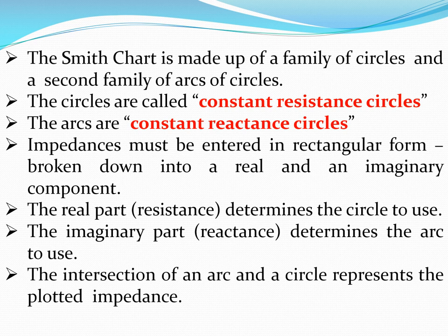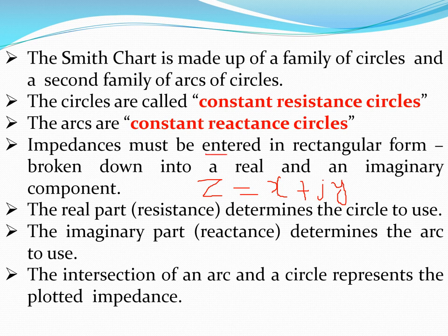Impedances generally will be in rectangular form. What is meant by rectangular form? For example, Z is equal to X plus jY. In that case, X is going to be the real part and Y is going to be the imaginary part. So any impedance has to be entered in rectangular form. The real part, X, determines the circle to use. The imaginary part, Y, is the reactance, which determines the arc to use. The intersection of an arc and circle represents the impedance.